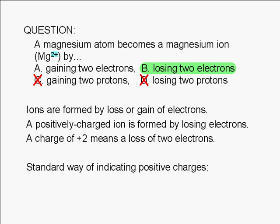Note: The standard way of indicating positive charges is to write a plus sign if the charge is +1, 2+ if the charge is +2, 3+ if the charge is +3, and so on.